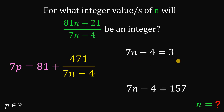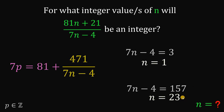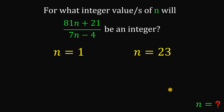From the first valid equation, 7n = 7, so n = 1. From the second, (7n - 4) = 157, adding 4 gives 7n = 161, and dividing both sides by 7 gives n = 23. Therefore, we have found two possible values for n.